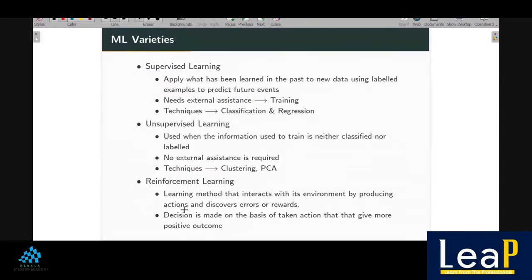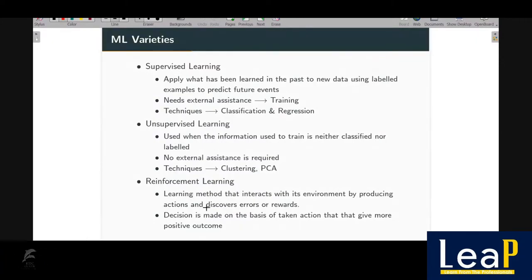Reinforcement learning is a learning method that interacts with its environment by producing actions and discovering errors or rewards. It is just like playing chess - if you make a move and get a setback, you understand the move is dangerous; if you do a good move, you are rewarded. Decisions are made on the basis of actions that give more positive outcomes. Reinforcement learning is relatively newer than supervised and unsupervised techniques. Most algorithms we discuss fall into supervised and unsupervised categories as they are the most widely studied.